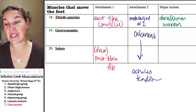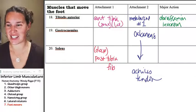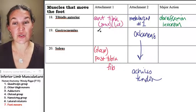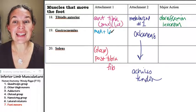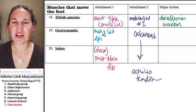And gastrocnemius attaches... Now, this is an interesting attachment. Gastrocnemius attaches to the medial and lateral epicondyles.